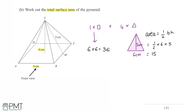Now I have the area of the square base and the area of one triangular face. I can simply add them together: 36 for the square base, plus four lots of the triangular faces — 4 times 15 — giving me 36 plus 60, which gives a final answer of 96.